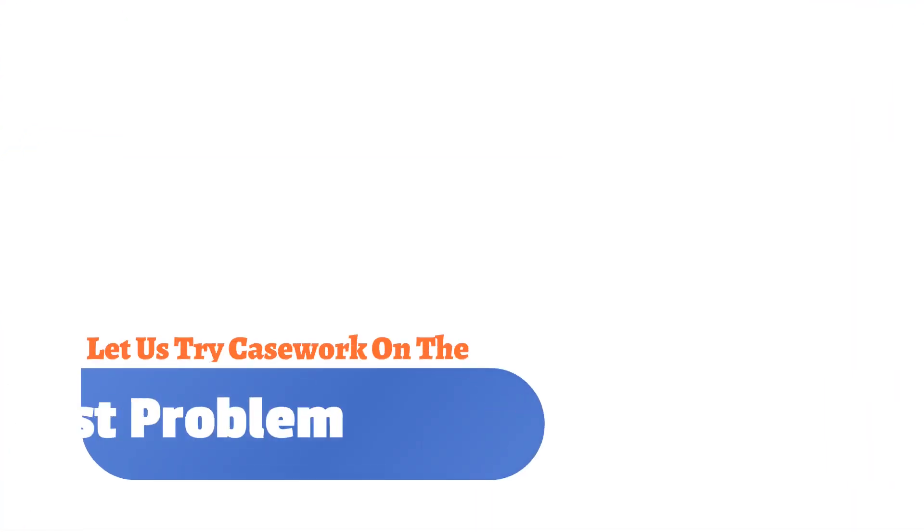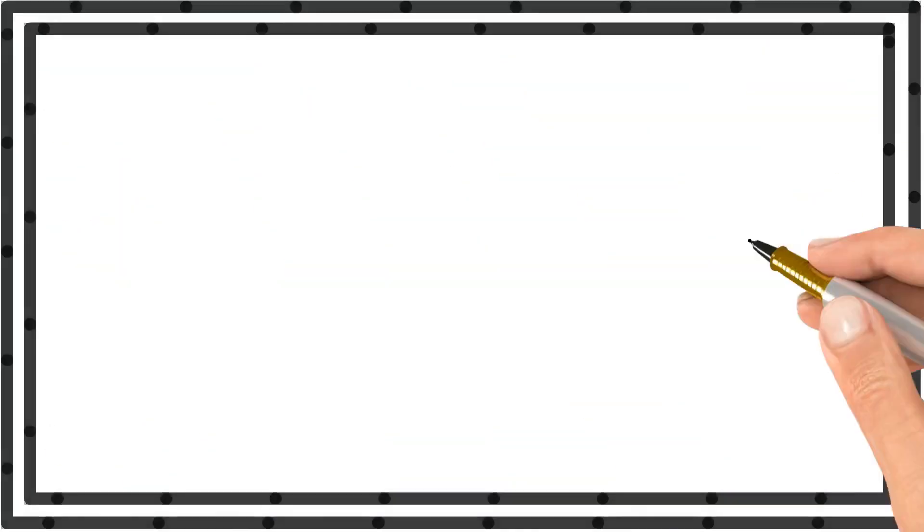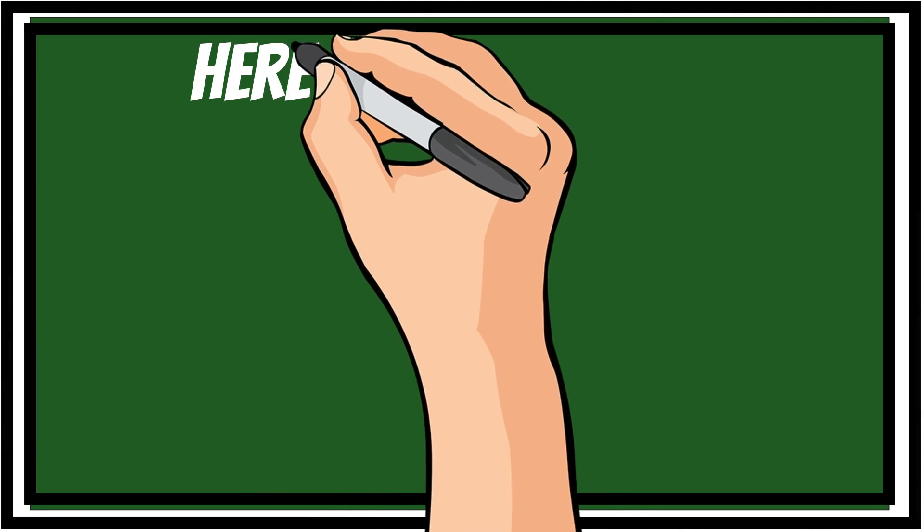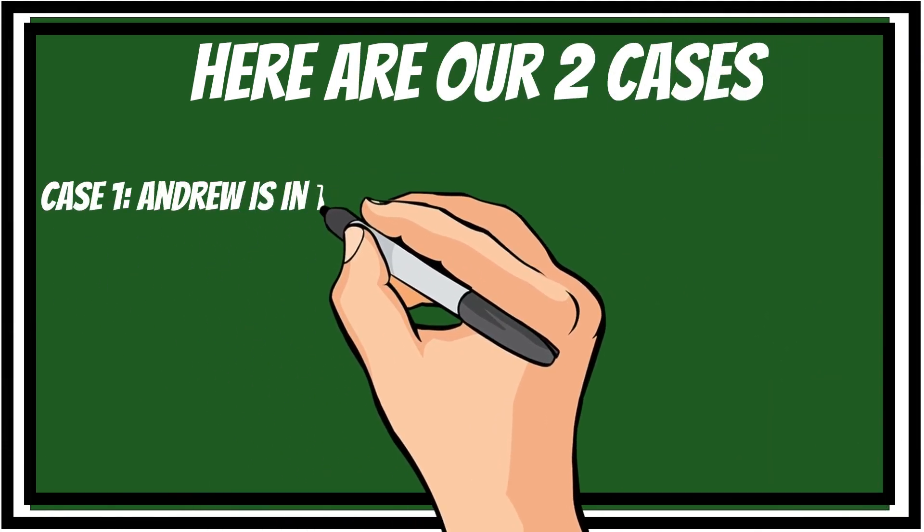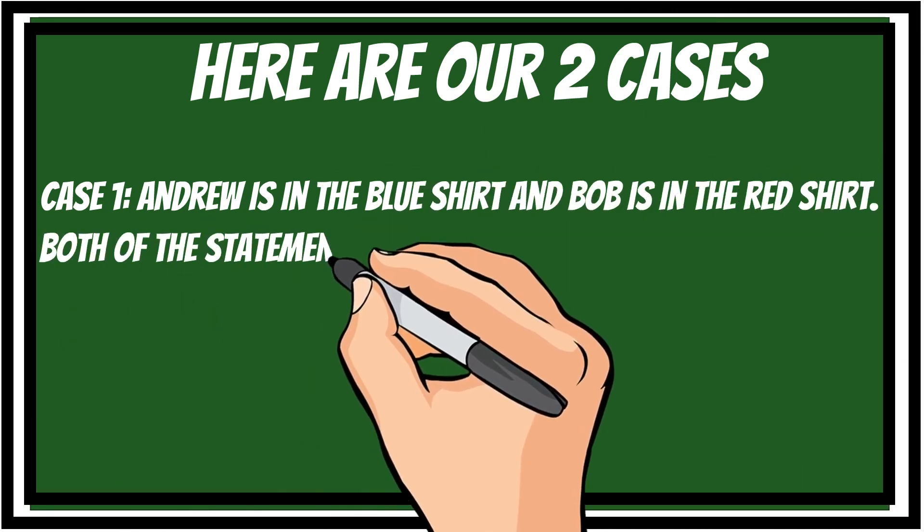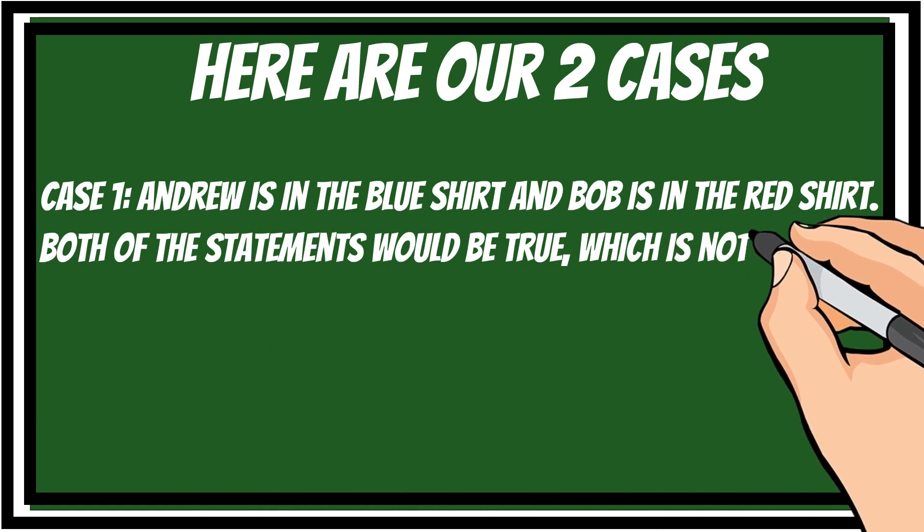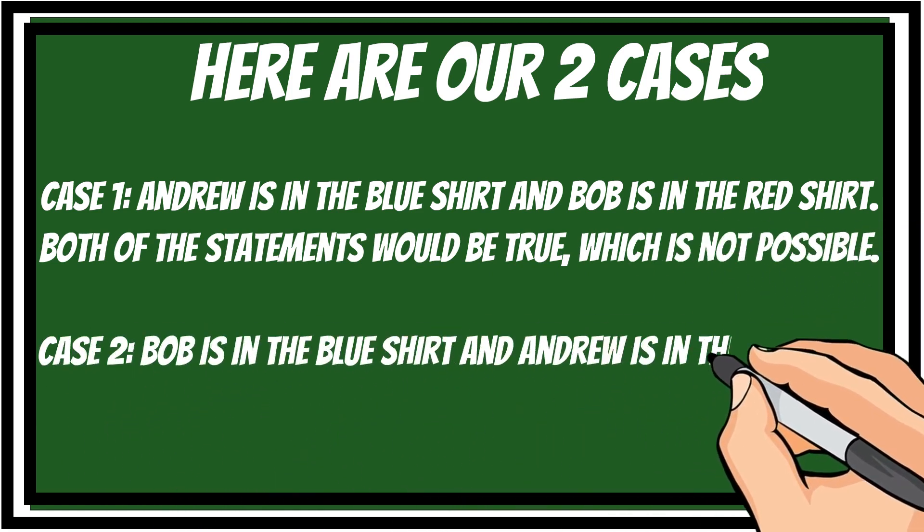Let us try casework on the first problem. Here are our two possible cases. Either Andrew is in the blue shirt and Bob is in the red shirt. Both of the statements would be true, which is not possible. Case 2, Bob is in the blue shirt and Andrew is in the red shirt. Both of the statements would be false, which is possible. Thus, Andrew is wearing red.